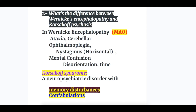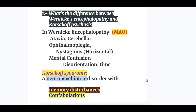Question number two: what's the difference between Wernicke's Encephalopathy and Korsakoff's psychosis? In Wernicke's Encephalopathy: ataxia of cerebellar origin, ophthalmoplegia with horizontal nystagmus, and mental confusion. Whereas Korsakoff syndrome is a neuropsychiatric disorder — an extension of Wernicke's Encephalopathy — with memory disturbances and confabulation.